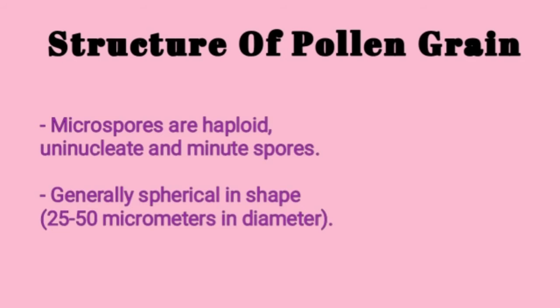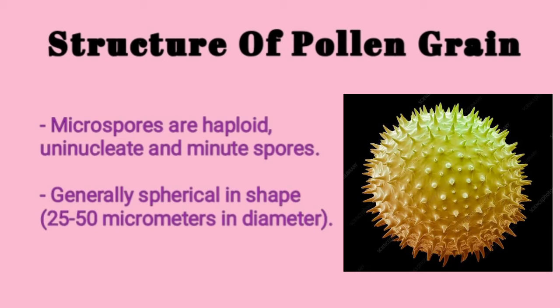Microspores are haploid, uninucleate and minute — uninucleate means single nucleus. We can find a single nucleus in the microspore and they are very minute, very small. They are generally spherical in shape, 25 to 50 micrometers in diameter. Imagine how small the microspores or pollen grains are — they are like a powder or dust particles.